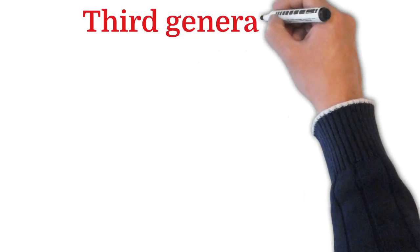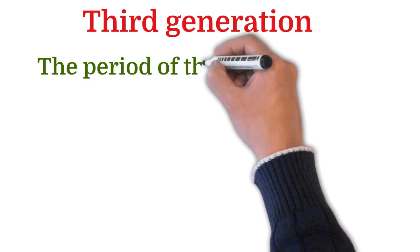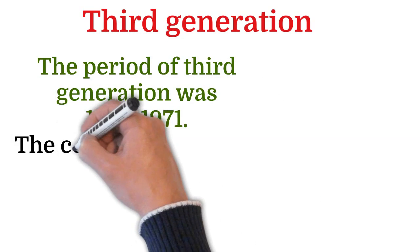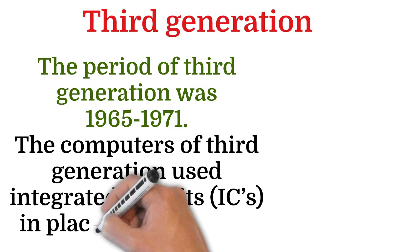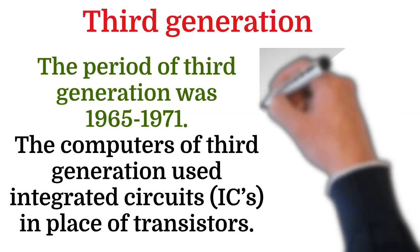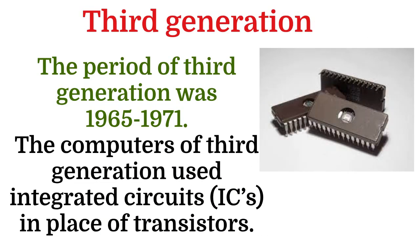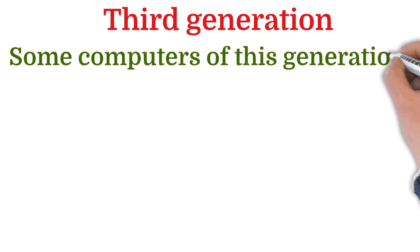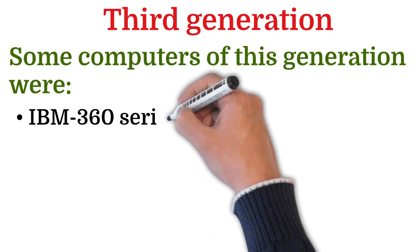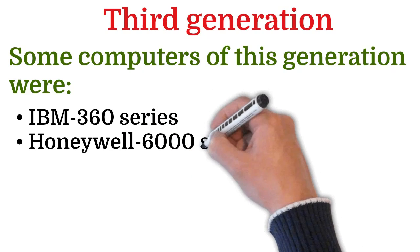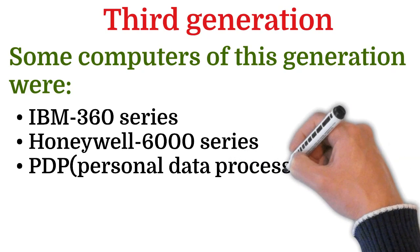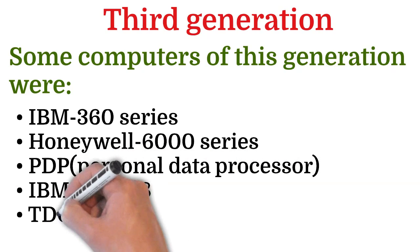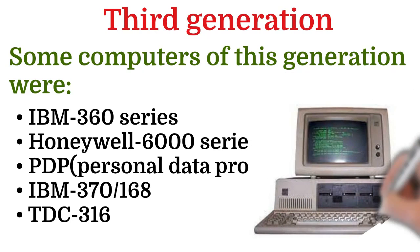The third generation computers spanned the period 1965 to 1971. They used integrated circuits, i.e., ICs, in place of transistors. Some computers of this generation were IBM 360 series, Honeywell 6000 series, PDP (Personal Data Processor), IBM 370/168, and TDC 316.